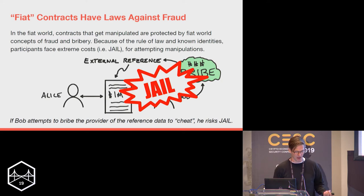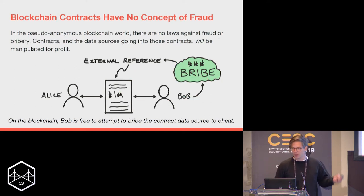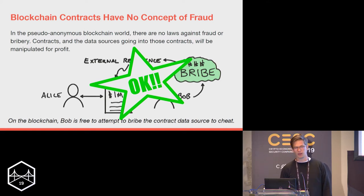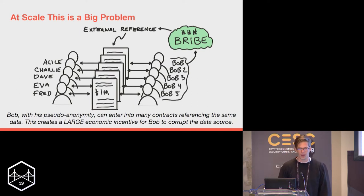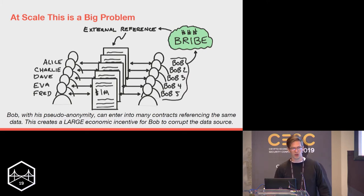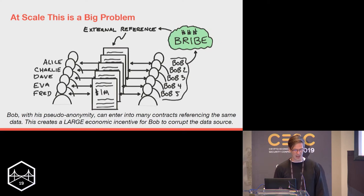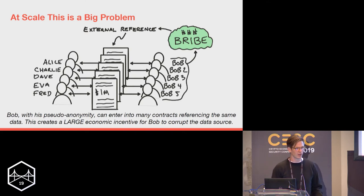We have this nice quality in the real world where we can lock someone up if they do bad things, but blockchains don't have this concept of fraud. In a Byzantine world, if Bob can manipulate the contract or bribe the external reference, he will. This becomes a really big problem at scale — in a pseudonymous world Bob can just keep writing contracts with Charlie, Dave, Eva, Fred, making two and a half million dollars by bribing the external reference, and he can scale this limitlessly.